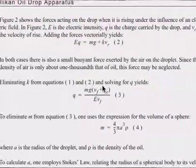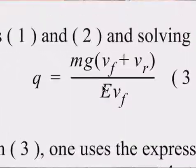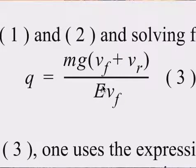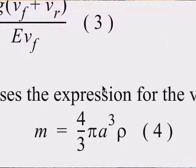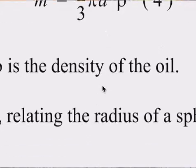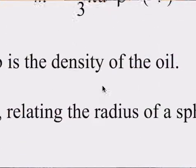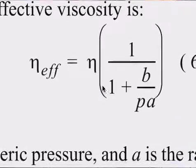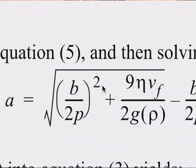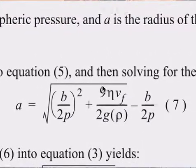Remember, this is our direction: we want to calculate the charge Q. Looking at this equation, Q is equal to the mass times gravity times what you see here — that's equation number three. In order to do that, we need to find mass using equation number four, and we need to calculate the radius using the equation down here.